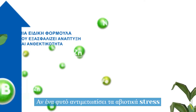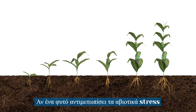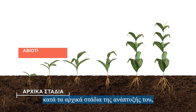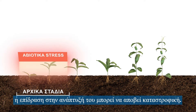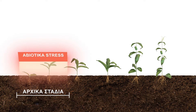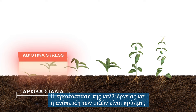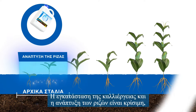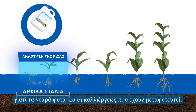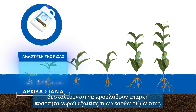If a plant encounters abiotic stresses in its early stages of development, the impact on growth can be devastating. Establishing the crop and developing its roots is critical, because seedlings and transplanted crops struggle to receive adequate water due to their young roots.